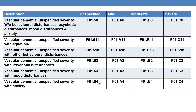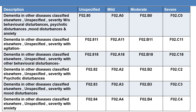Fifth character 4 indicates anxiety. To summarize: 1=behavioral disturbances, 2=psychotic disturbances, 3=mood disturbances, 4=anxiety. These are the various codes for unspecified, mild, moderate, and severe vascular dementia with anxiety. In the next slides, we have the entire code set for dementia classified in other diseases elsewhere and unspecified dementia.